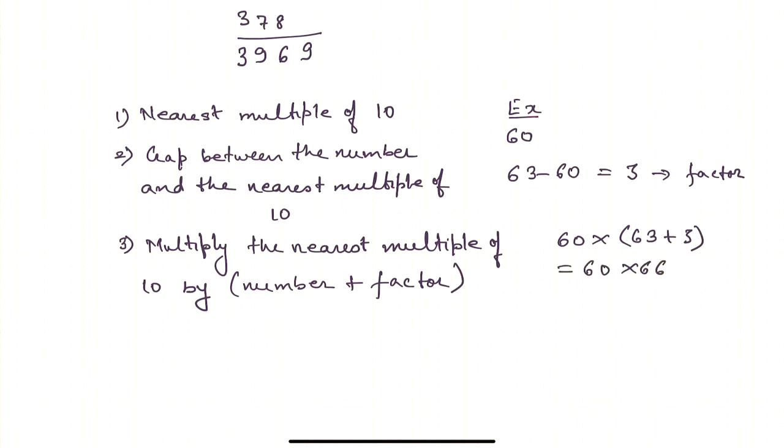If you see, it is nothing but 6 into 6 is 36 carry 3, and then 3960. This is easier to calculate.